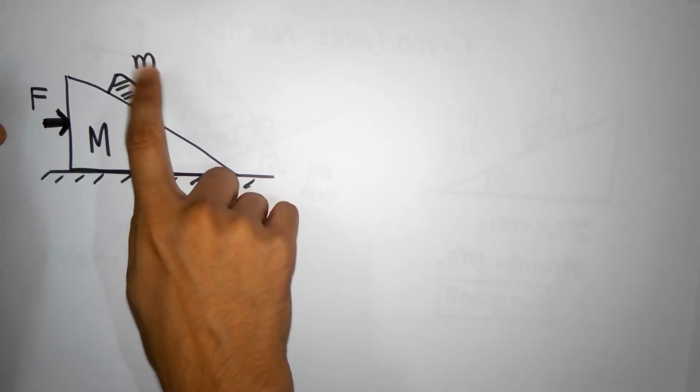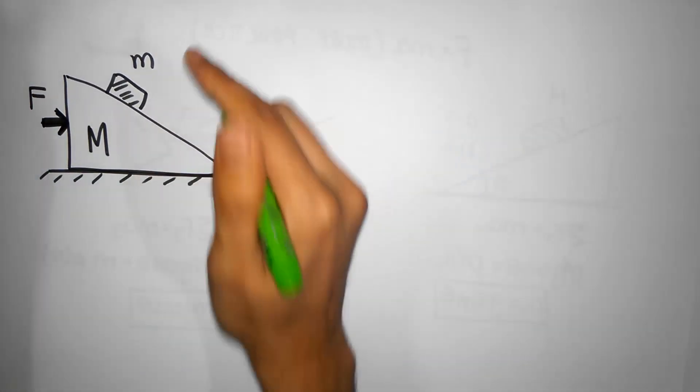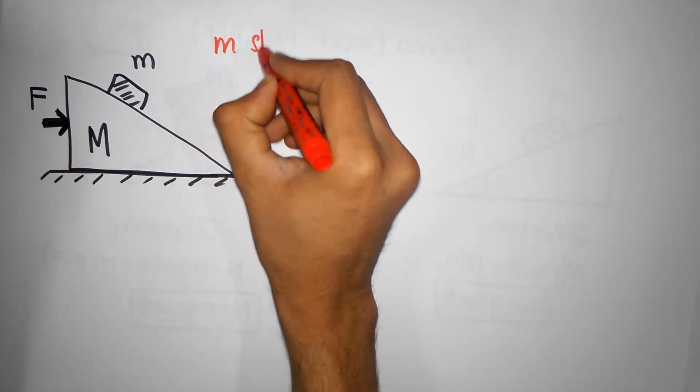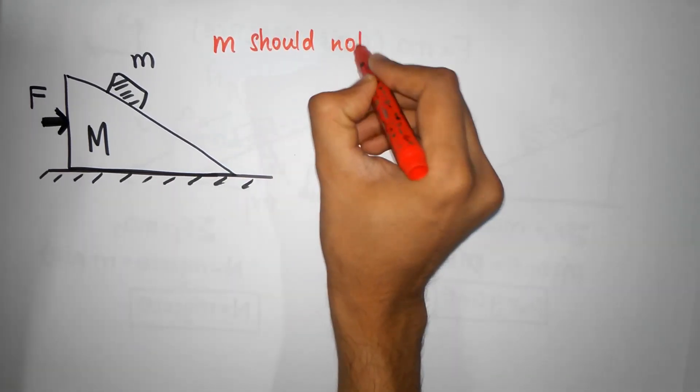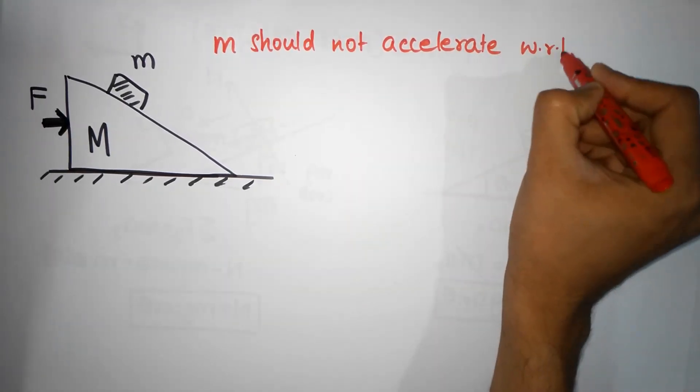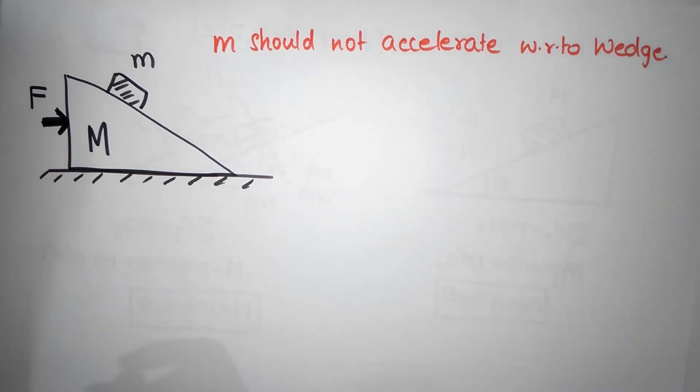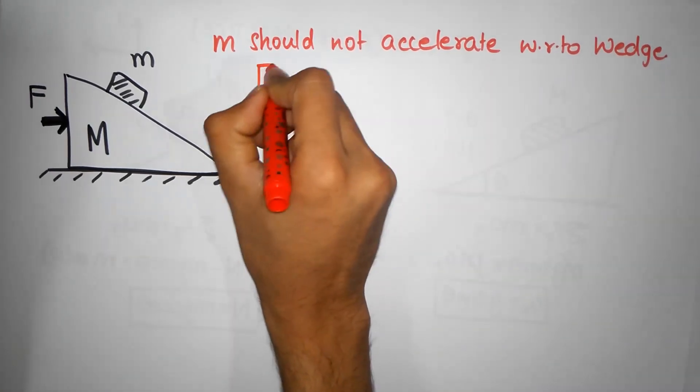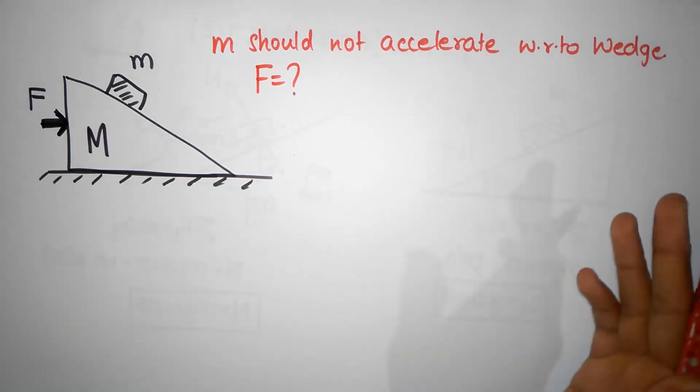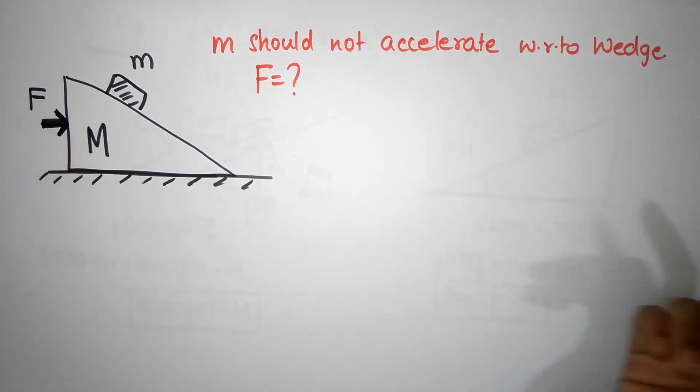We want to make sure M does not accelerate with respect to the wedge. If I want this condition, what should F be? This is a neat NEET level problem, it's a little involved but a standard problem that's been asked many times.